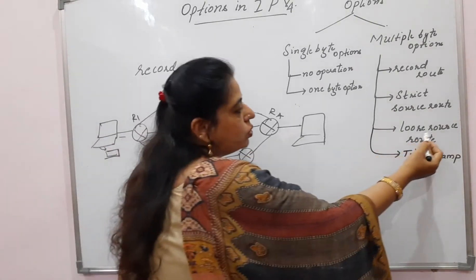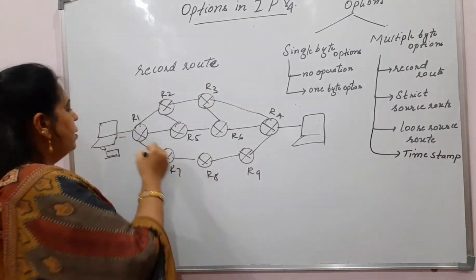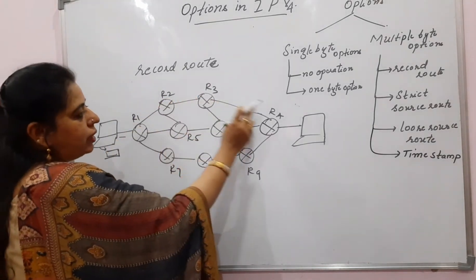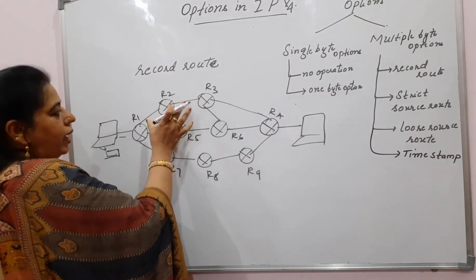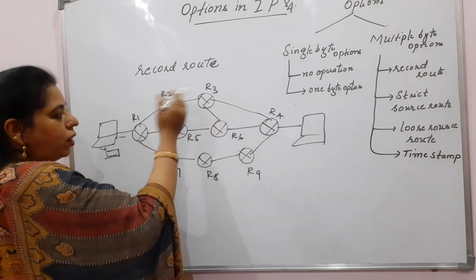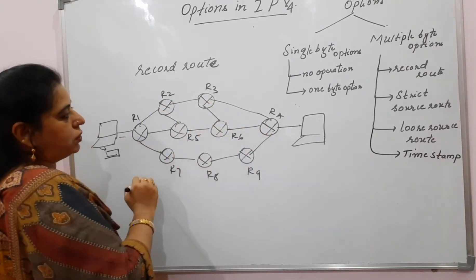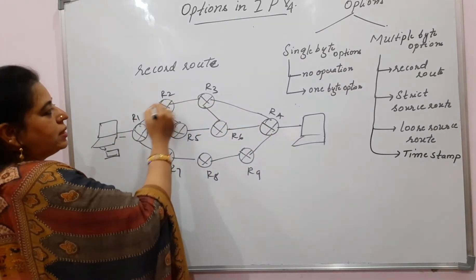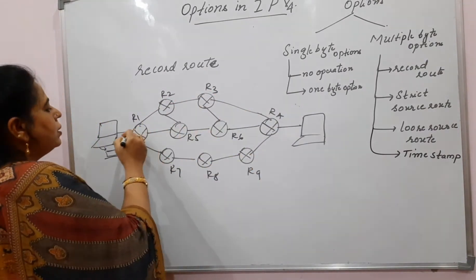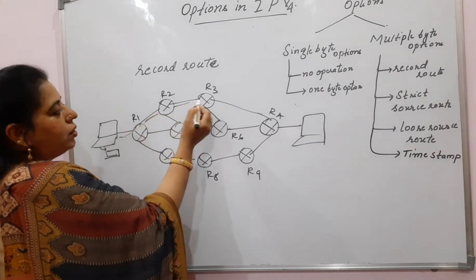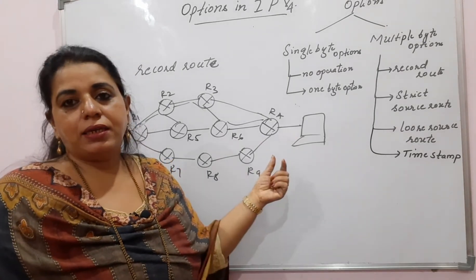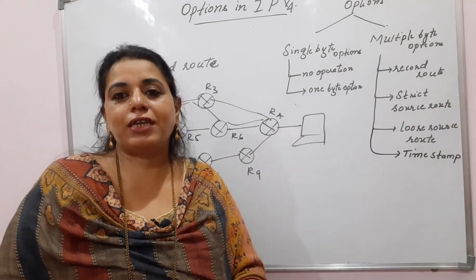The other option is loose source route. Here, for example, it is mentioned R1, R2, R3, R4 — but the IP packet can deviate slightly. In the loose source route, the packet can take a path like R1, R2, R3, R6, and then R4. So there is some relaxation — you can visit other routers as well in between the specified ones.